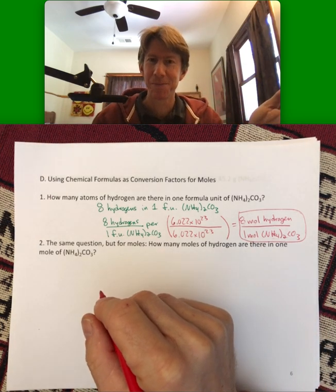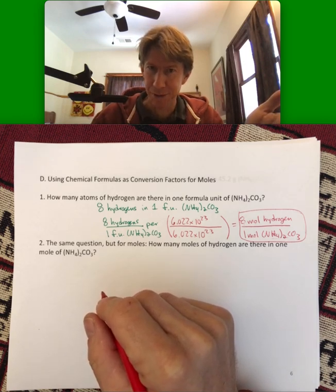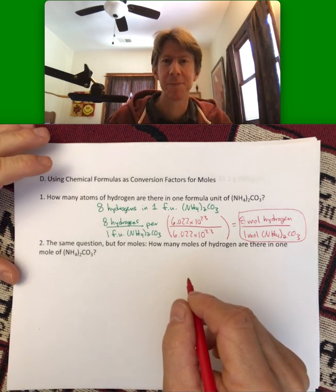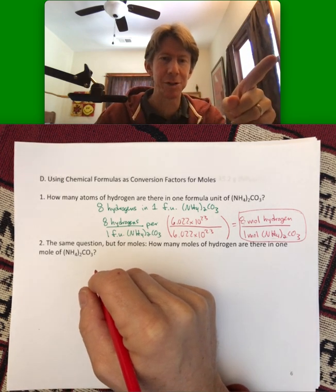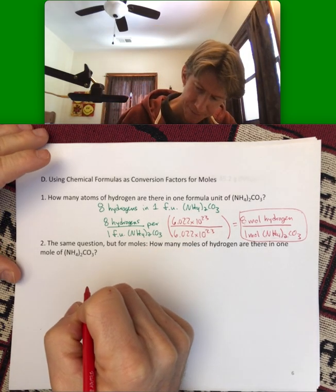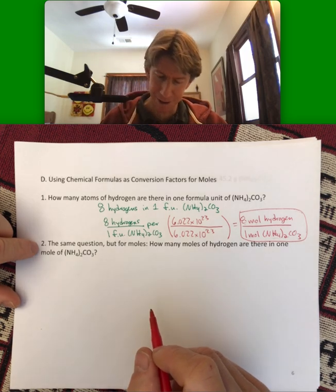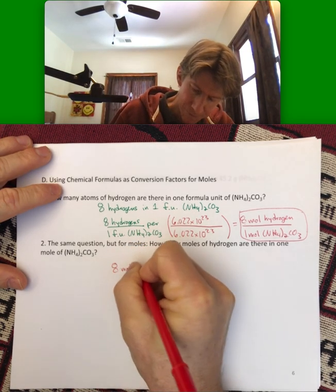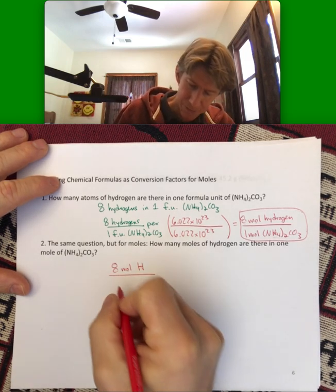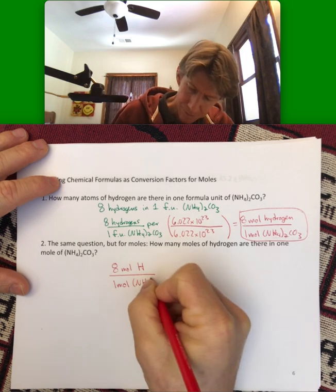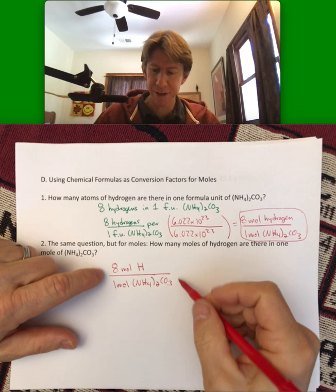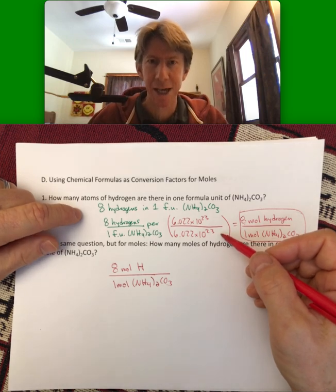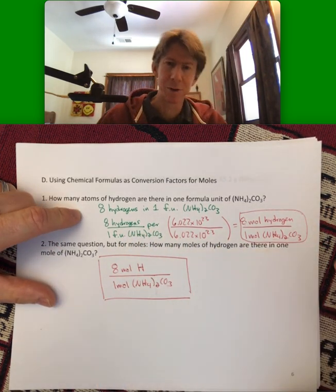And pretty soon it's going to be all moles. So we're going to leave behind largely atoms and molecules. It's going to be all moles, moles everywhere, moles for you and moles for you and moles for you, moles for everyone. So now let me just write the answer down here. How many moles of hydrogen are there in one mole of that? So eight moles H over one mole of ammonium carbonate. And so this is our new unit conversion factor. It's based on the fact that we've already done this for atoms and or molecules and or formula units. And so we will start using it pretty quickly.